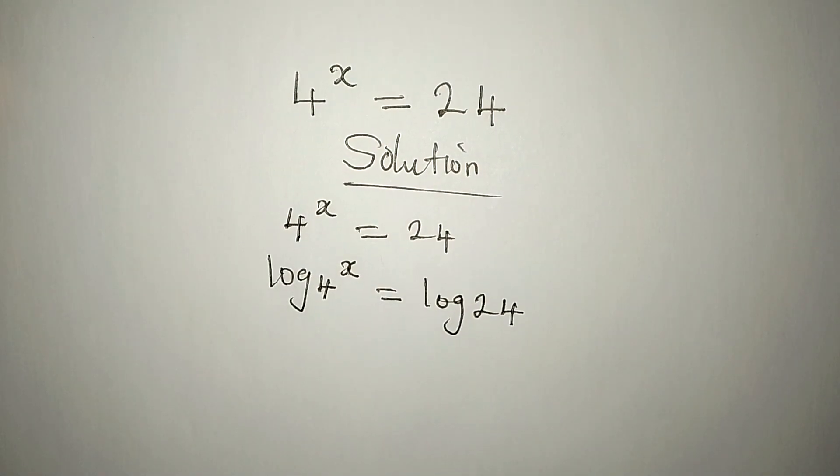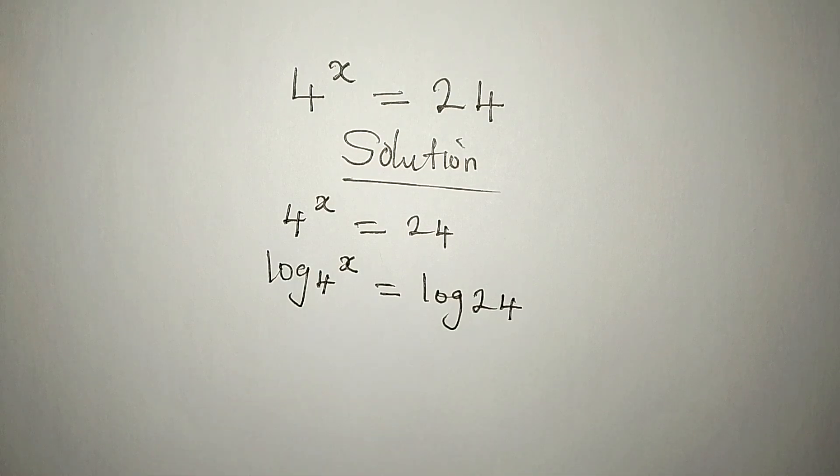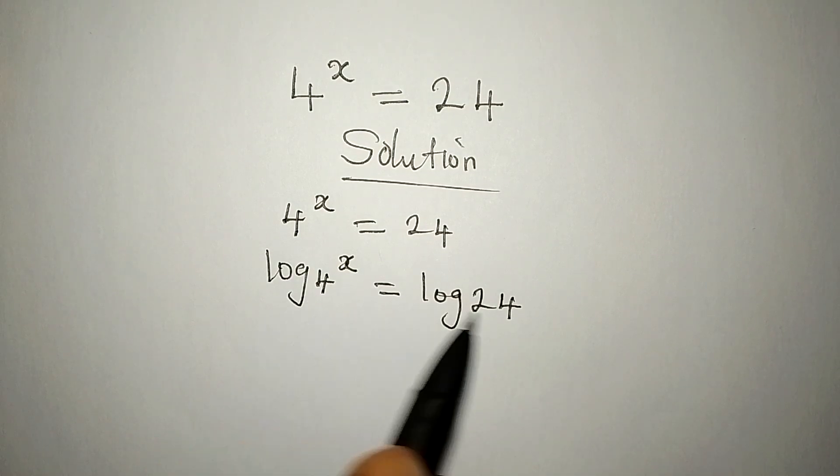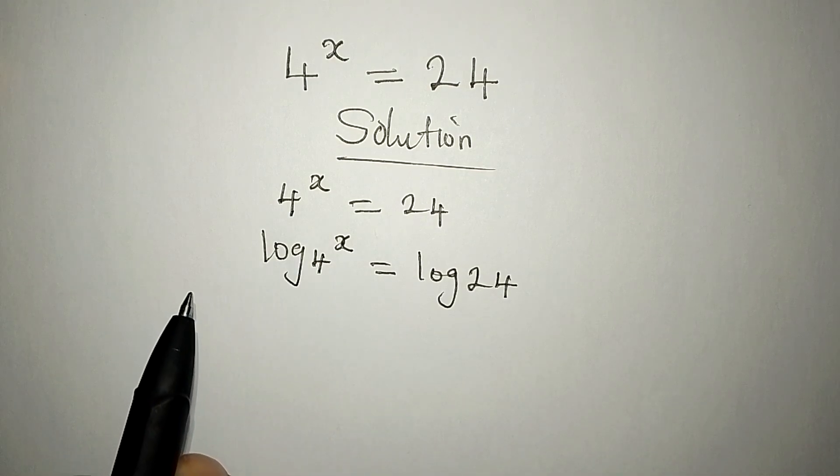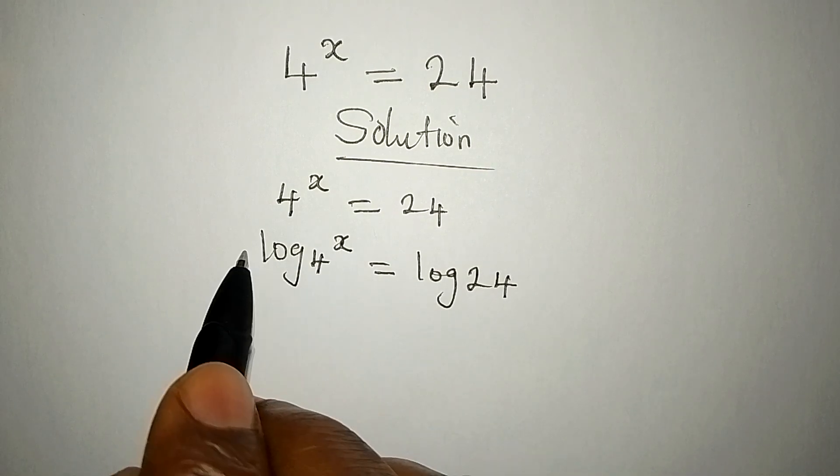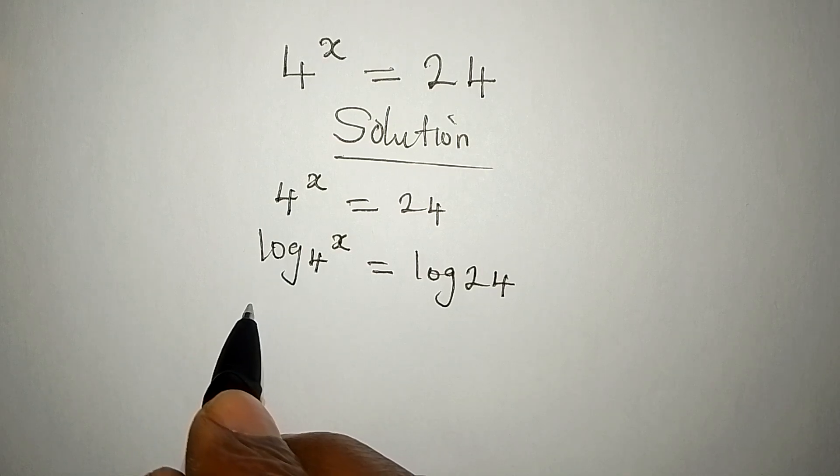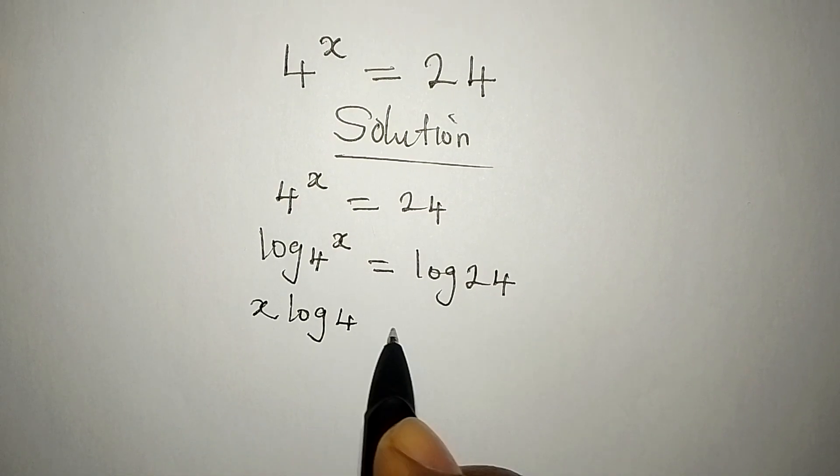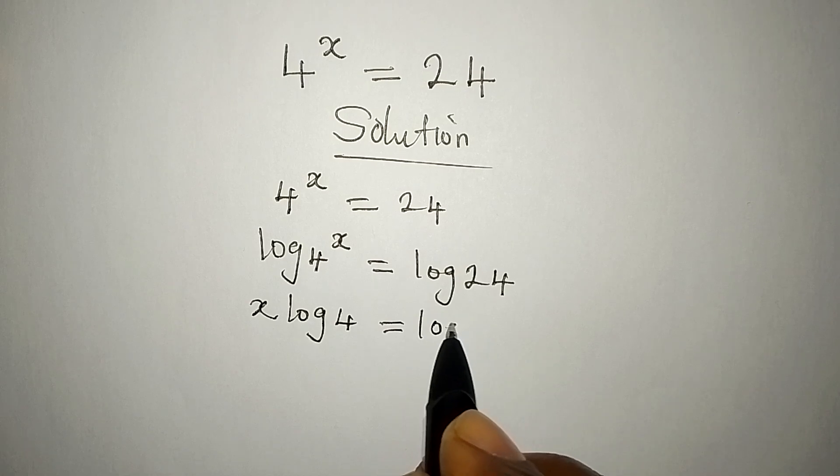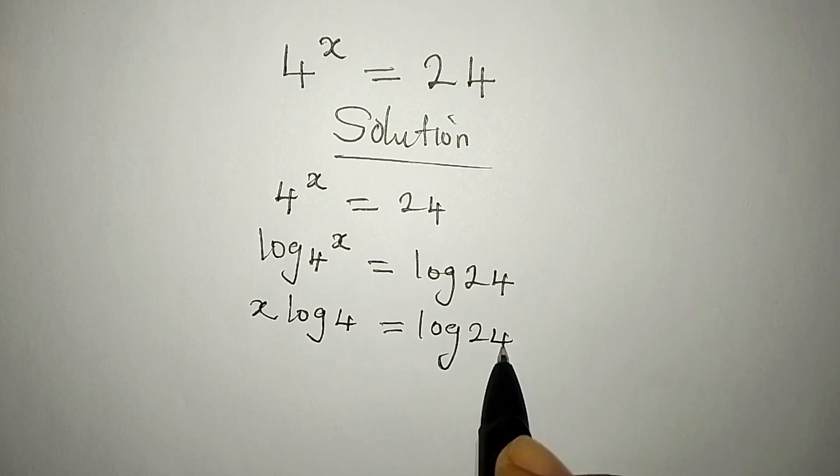Now, I'm going to show all the steps. According to the power law of log, this can go behind. So that we have x log 4 equal to log 24.